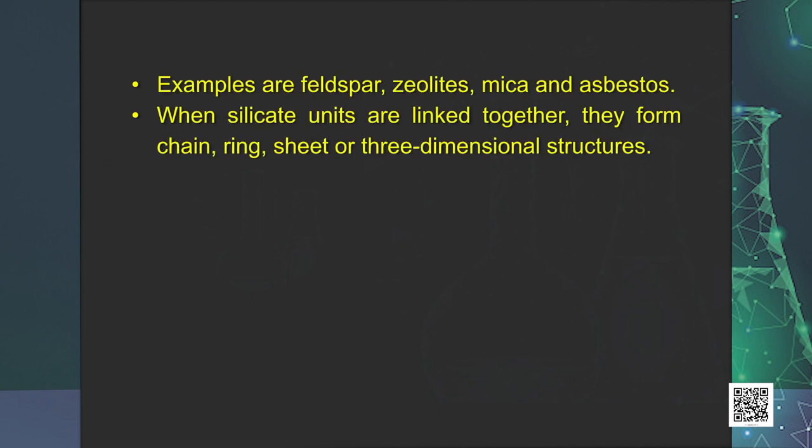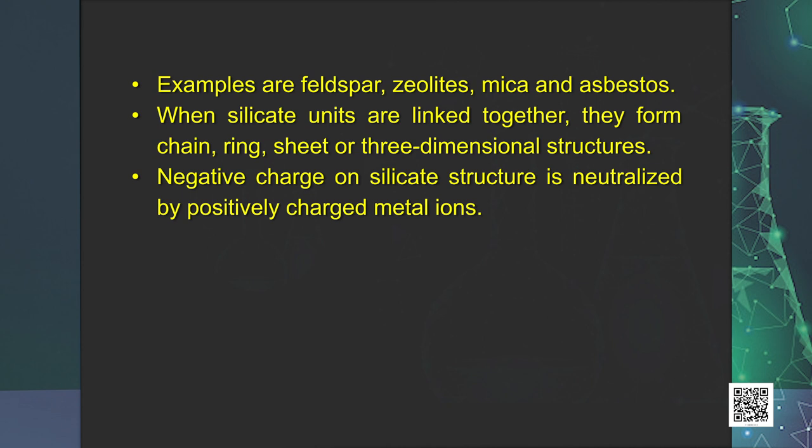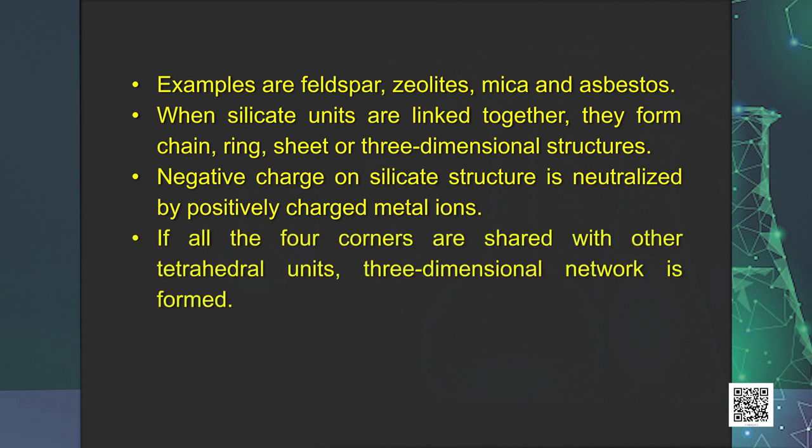When silicate units are linked together, they form chain, ring, sheet, or three-dimensional structures. Negative charge on silicate structure is neutralized by positively charged metal ions. If all the four corners are shared with other tetrahedral units, three-dimensional network is formed. Two important man-made silicates are glass and cement.